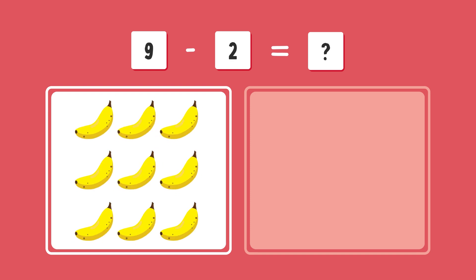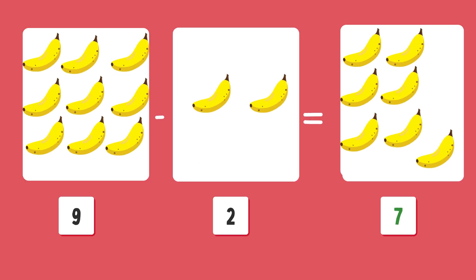What is nine minus two? Wow, let's think. Correct answer is seven.